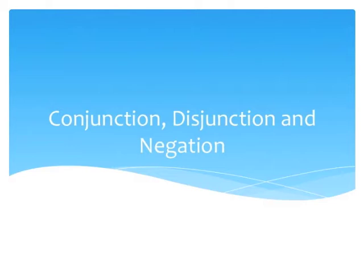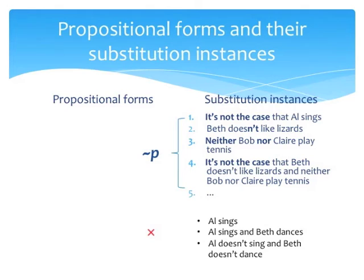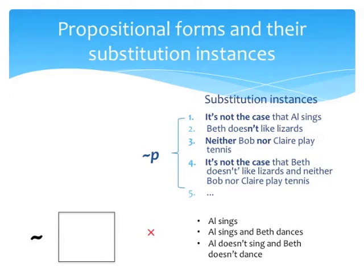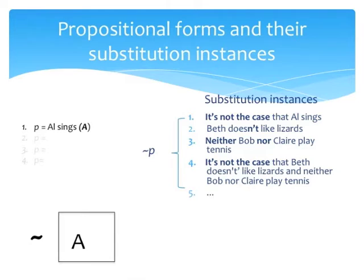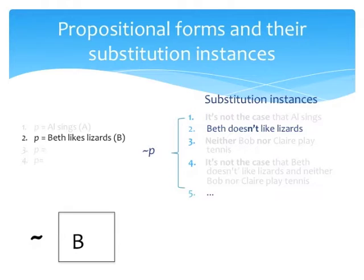Now let's consider conjunction, disjunction, and negation together. Here we can see that the sentences in blue are instances of the form tilde-P, but the other ones are not. This is because you can get each of the blue sentences from the form by substituting a sentence for P. Let's visualize the role of P as a placeholder — think of it as a box where you can insert sentences. So suppose that P is 'Al sings.' To get the first blue sentence, you substitute P with 'Al sings,' or if you abbreviate, you represent 'Al sings' with a little 'a,' with the result that you get tilde-a. Something similar happens with sentence two, where the substitution is with 'Beth likes lizards,' or with b, its abbreviation.